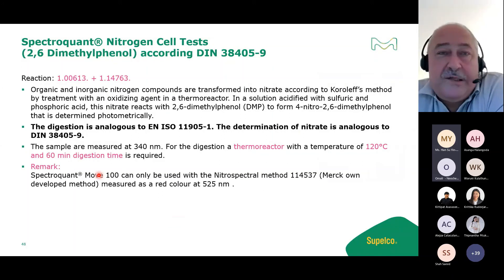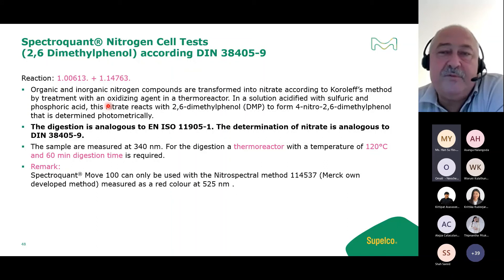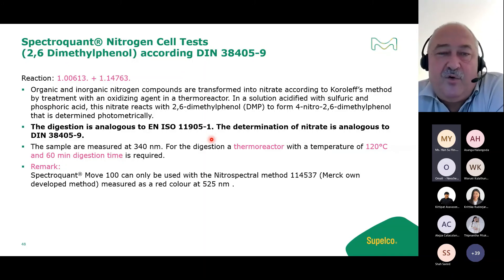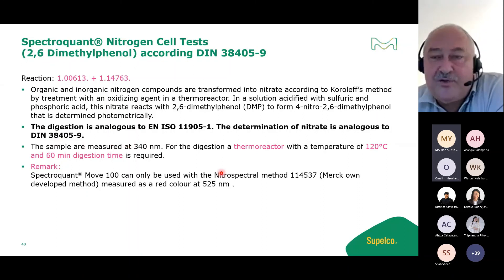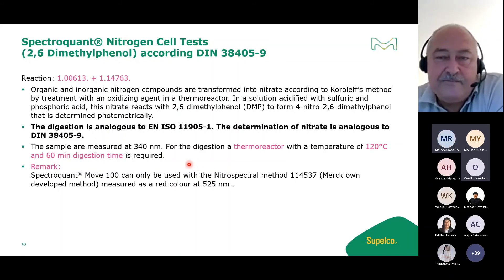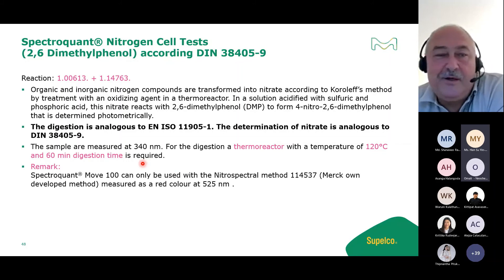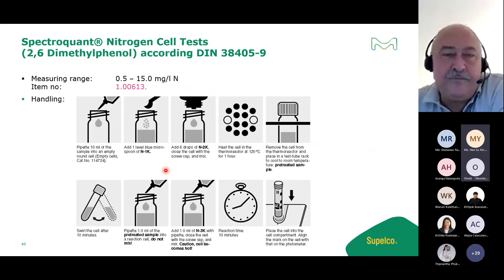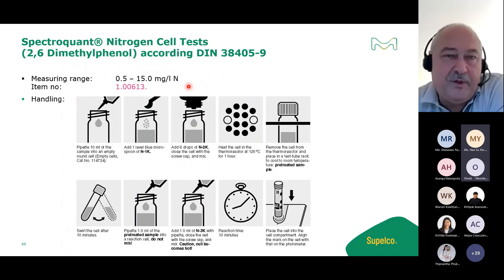For total nitrogen measurement, two test kits use the 2,6-dimethylphenol method. Digestion follows ISO 11905 part one, and nitrate measurement follows the German DIN standard. Digestion conditions are 120°C for 60 minutes. The measurement range of 0.5 to 250 mg/L is typical for wastewater treatment plant outlet measurement and is very easy to handle.